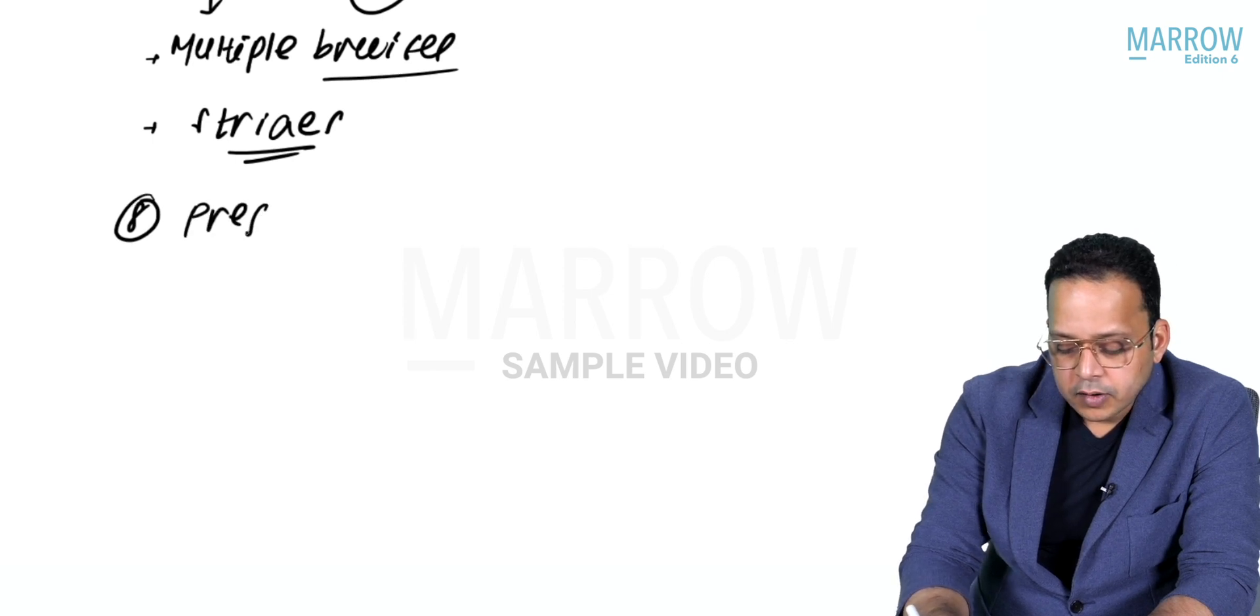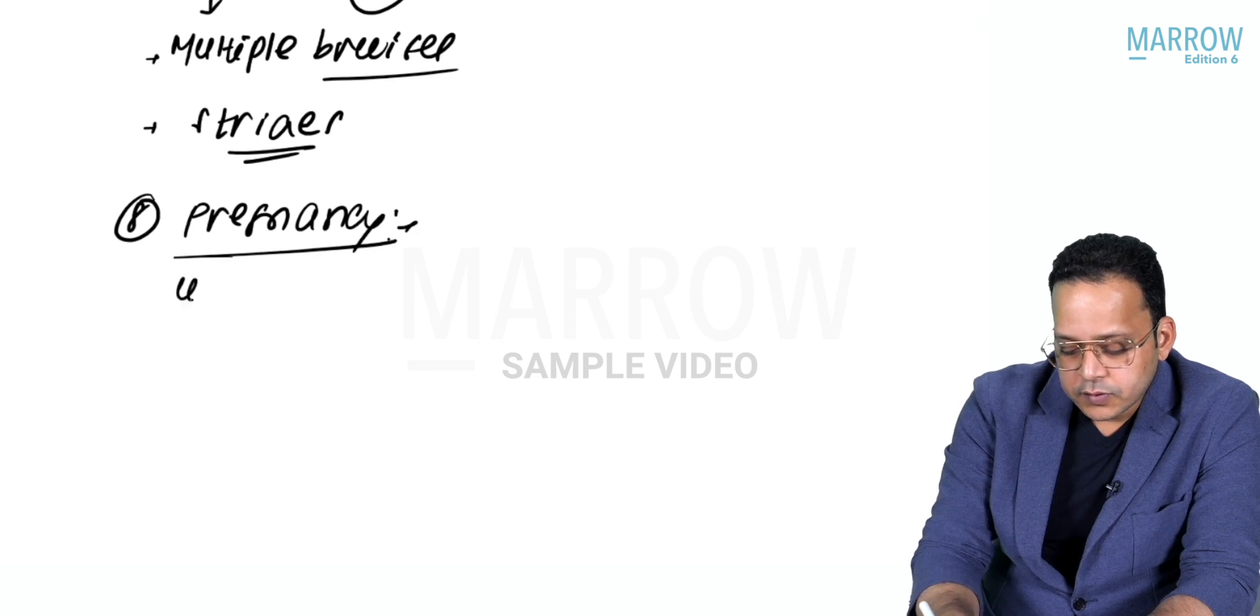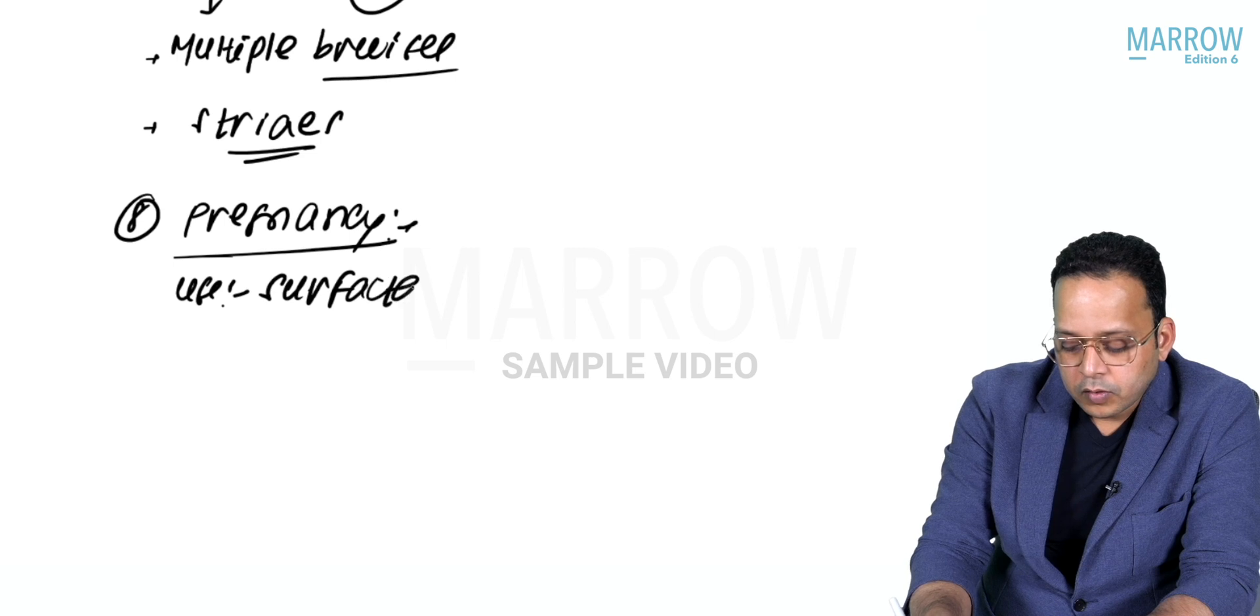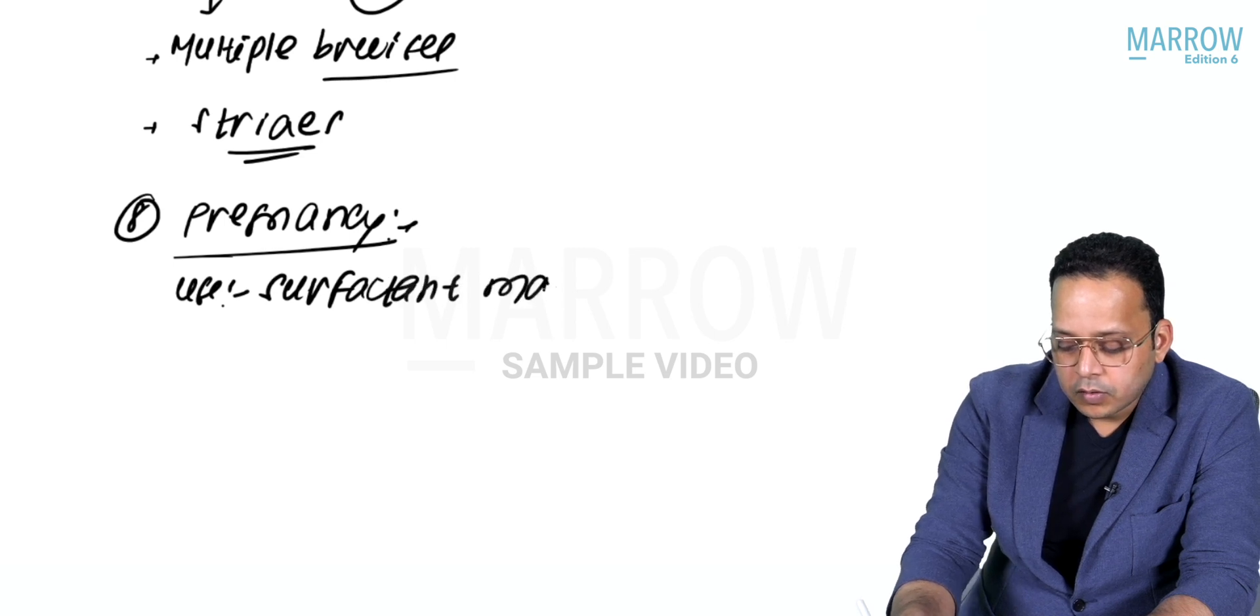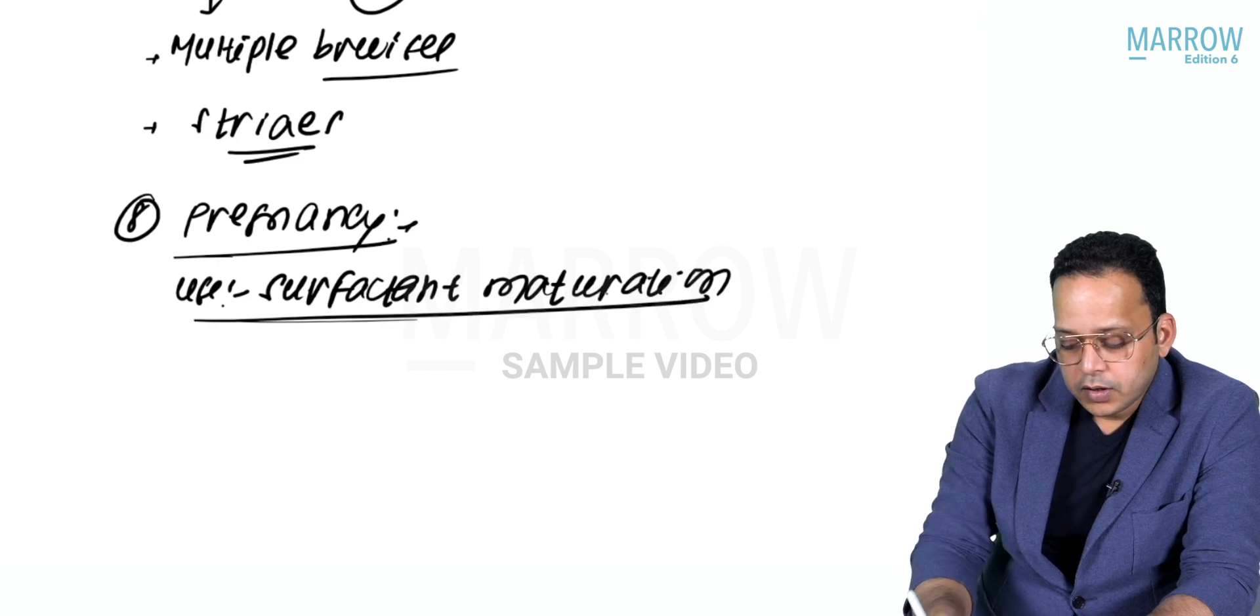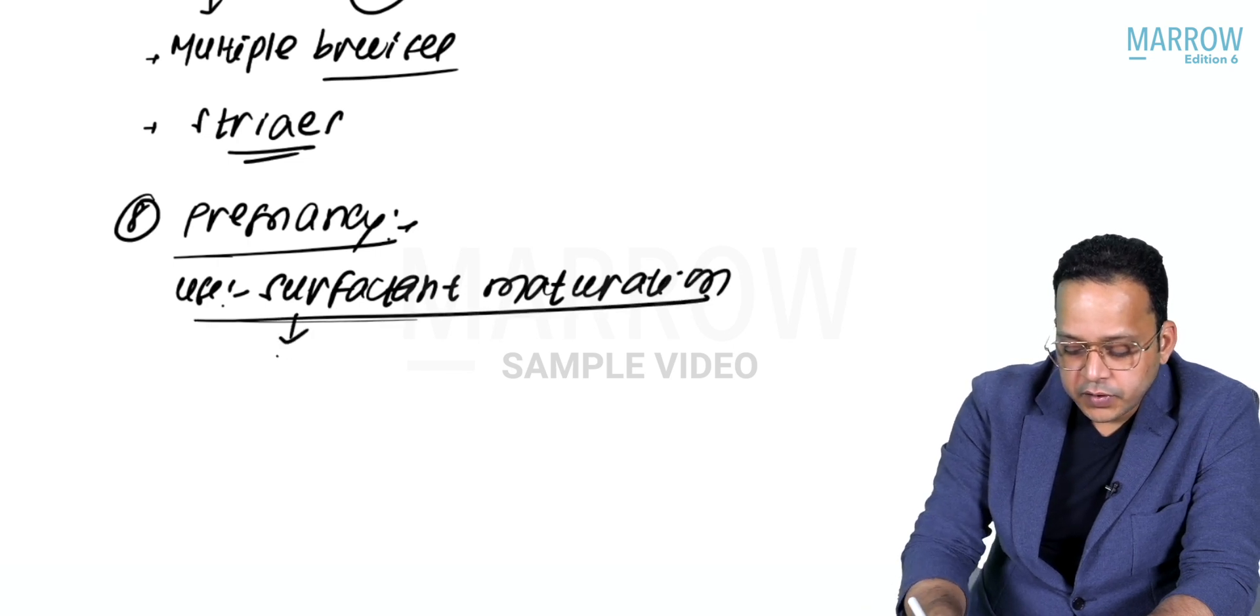Number eight, what is the effect in pregnancy? We use steroids in pregnancy for surfactant maturation. For surfactant maturation we use either dexamethasone or betamethasone.